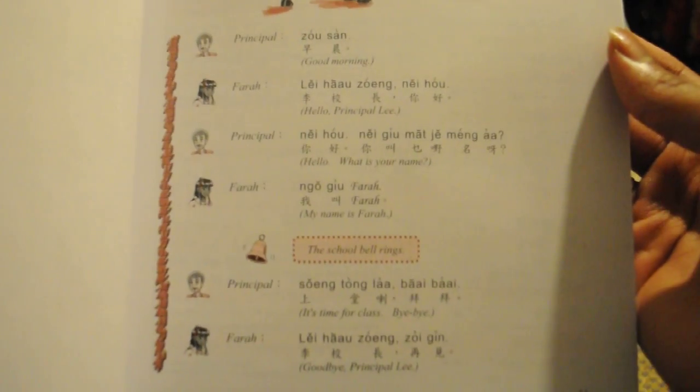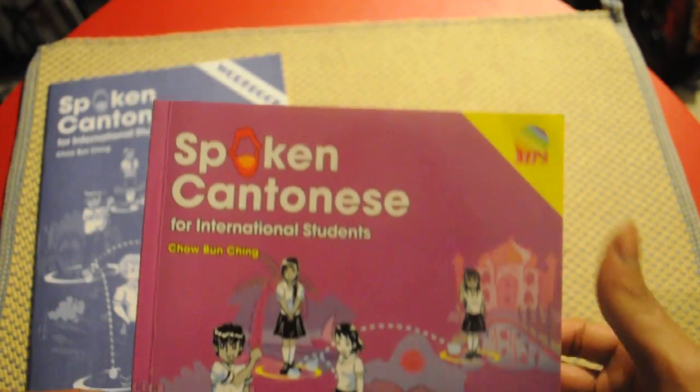You can only get this book at, what is that, situational conversation. I like that. You'll only be able to get this book over on Greenwood Press, Spoken Cantonese. It comes with audio. And as you can see here, this is basically a workbook.